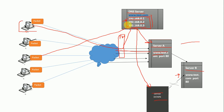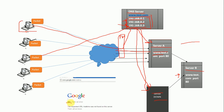Since the DNS cannot remove the entry, when the third request comes it will again send that request to the downed server. The user will get a 404 error — server not found. The next request might go to Server A and the page will open, but if the following request goes to the downed server again, my website will be inaccessible. That is a great problem and also a reputational issue — users may think the website is unreliable, working sometimes and not others.